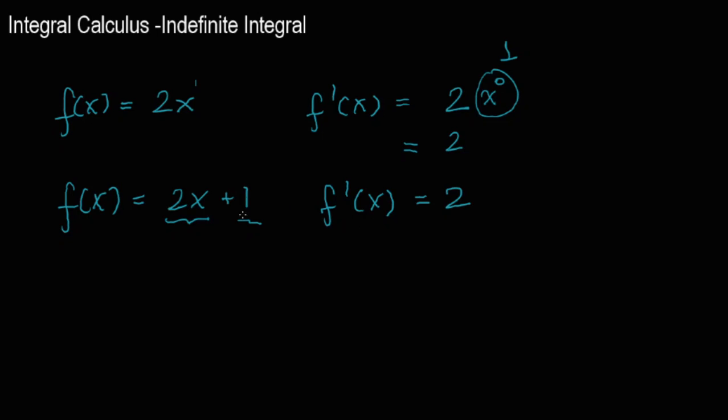And what's the derivative of 1? Well, since it's a constant, there's an x here to the power of 0, so if you drop the 0, you're multiplying by 0. Any time you take the derivative of a constant, it's 0. So what do you notice here? Those two values, they're the same. For two different functions, you will have the same derivative.